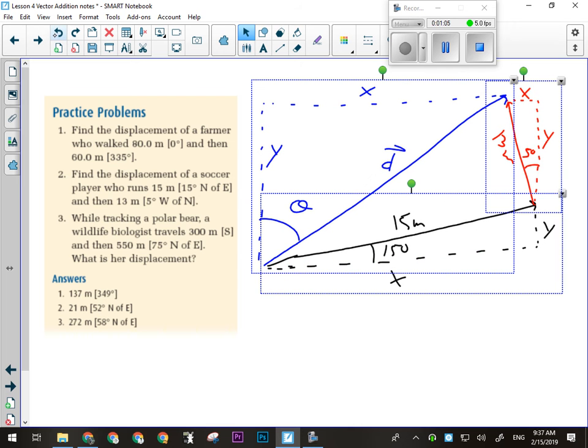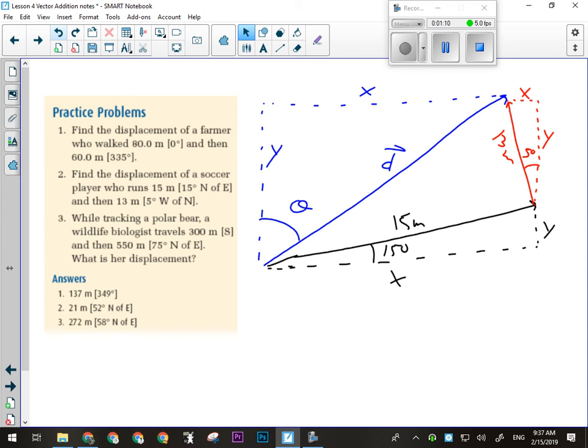Go away, green lines. All right, so here's what we got. I've gotta start calculating all the x's and all the y's. So I'll start out with my first vector, which was the 15-meter vector, 15 degrees north of east.